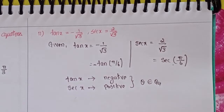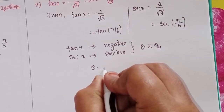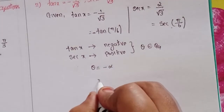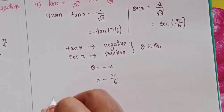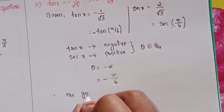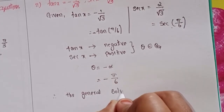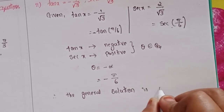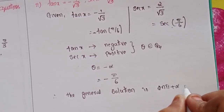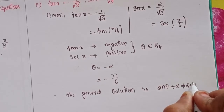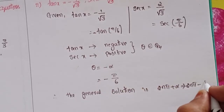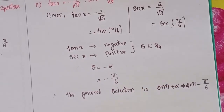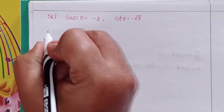So tan x is negative and sec x is positive, that means theta belongs to the fourth quadrant. In the fourth quadrant, theta equal to minus α, where α = π/6. Therefore the general solution is 2nπ + α, that means 2nπ minus π/6.